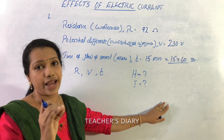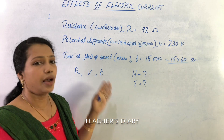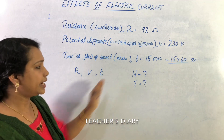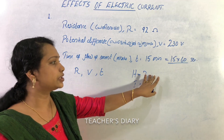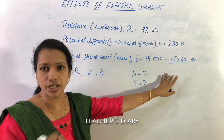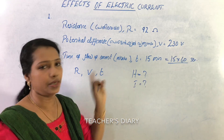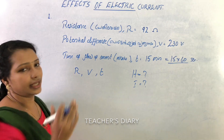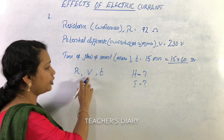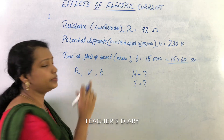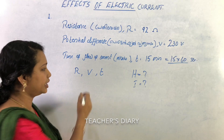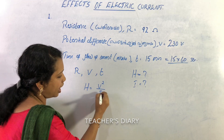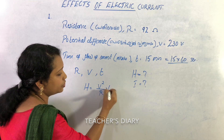The equation is H is equal to I squared R T. But here, I is not given. We have R, V, and T. So we use the equation H is equal to V squared by R into T.